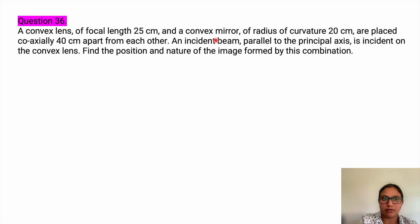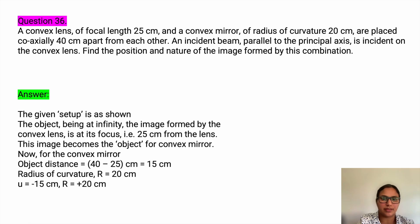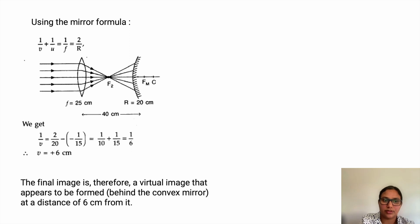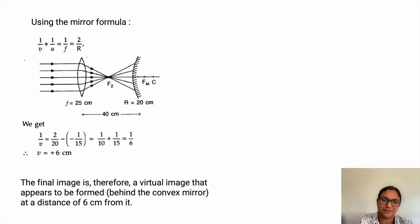Next question: a convex lens of focal length 25 centimeters and a convex mirror of radius of curvature 20 centimeters are placed coaxially 40 centimeters apart. An incident beam parallel to the principal axis is incident on the convex lens. Find the position and nature of the image formed by this combination. Using the same approach as before — calculating image distance for the lens, then for the mirror — the final image is virtual, appearing to be formed behind the convex mirror at a distance of 6 centimeters. Thank you, students.